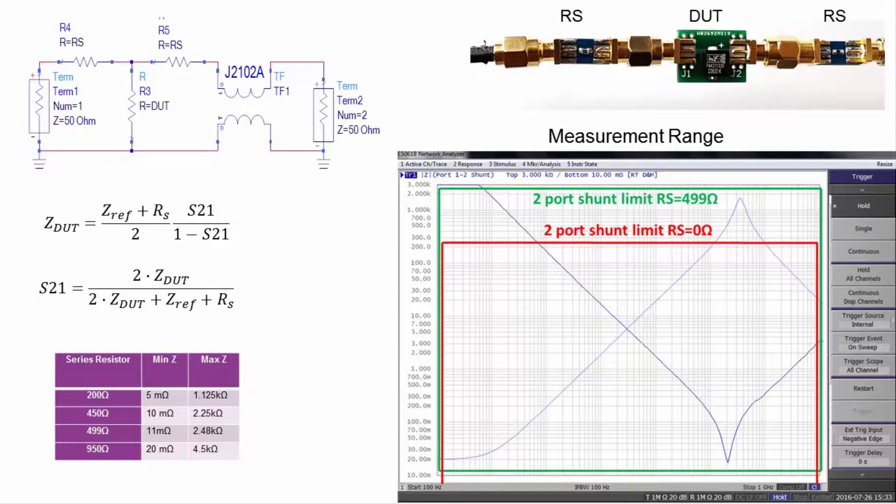The short open load calibration is still performed at the cables, and the through calibration is performed with the series resistors included, but the device being measured removed.